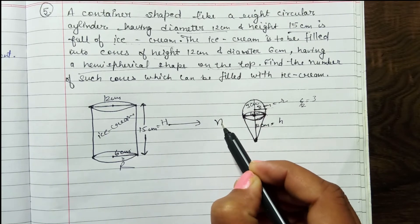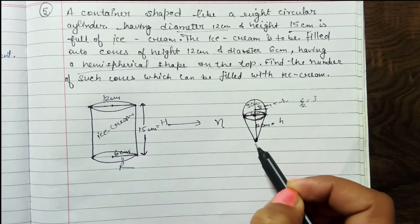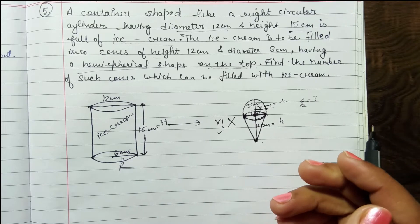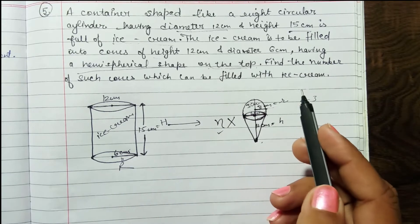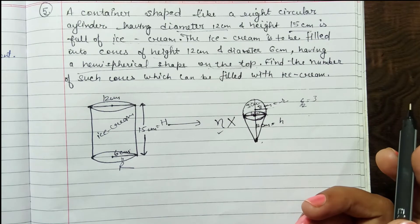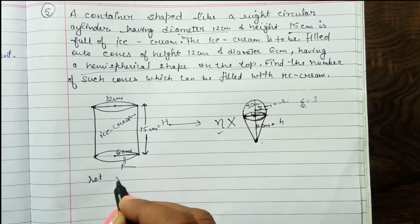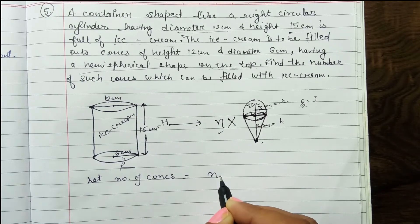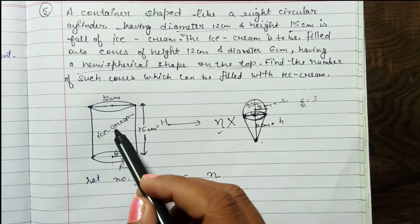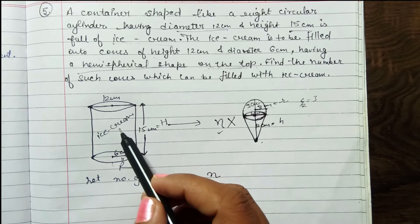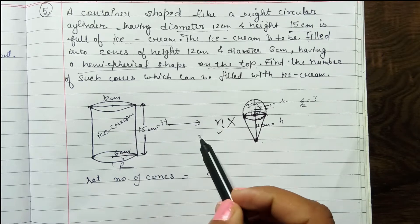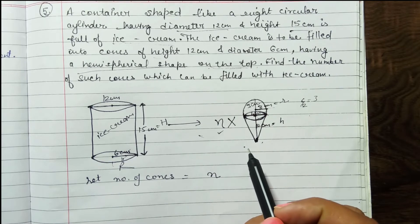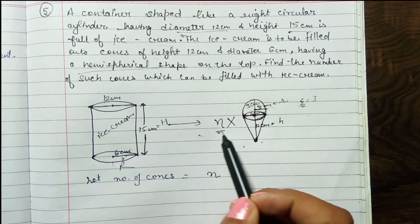Let n be the number of cones. The total volume of ice cream in the container equals the volume that can be filled into n cones. So the volume of the cylinder container equals n multiplied by the volume of one ice cream cone (including its hemispherical top).